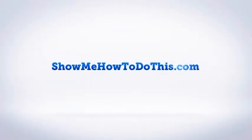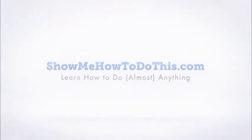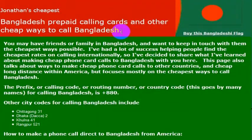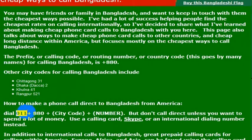Assuming that you have friends or family in Bangladesh and you would like to give them a phone call, this video will be very helpful for you. All you have to do is pick up the phone — any phone that has an international enabled plan on it — and dial 011, that's the international dialing code from the United States, and then 880, which is the country code for Bangladesh.